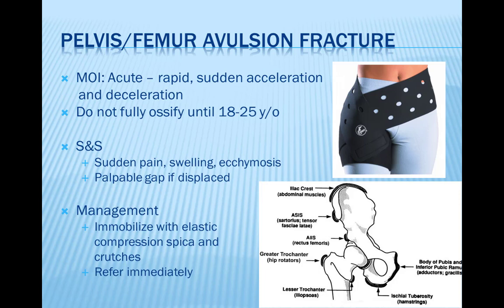Irritation of the growth plate without an avulsion fracture is known as apophysitis. Young athletes, especially adolescents at the age of puberty, are at higher risk for pelvic avulsion fractures. These are frequently seen in sports requiring sprinting, rapid changes in movement, or jumping — such as track, tennis, soccer, and hockey. Athletes with tight muscles or who fail to properly warm up are at greater risk. Pelvic avulsion fractures typically cause sudden, possibly severe pain at the site of bone injury.